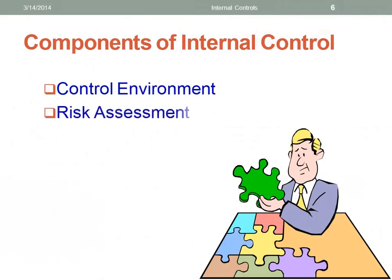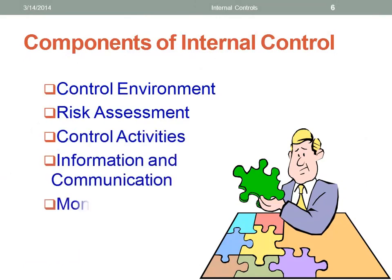The components of internal controls are based on COSO, and basically there are five areas. The first is the control environment, which is management — what message does management send to its employees about the importance of internal controls?